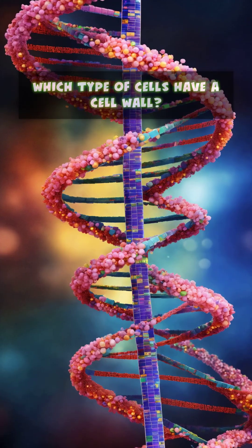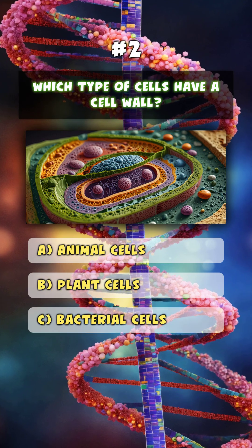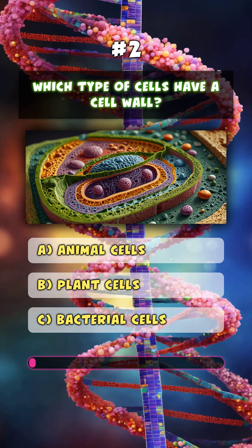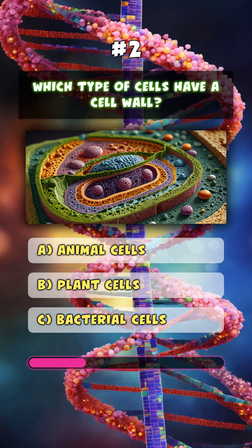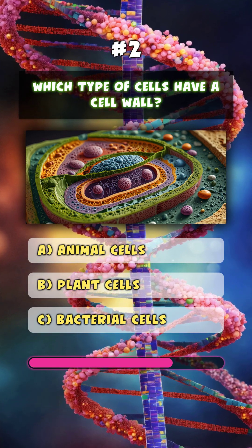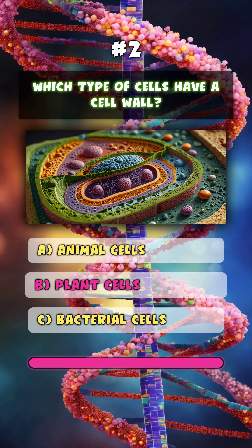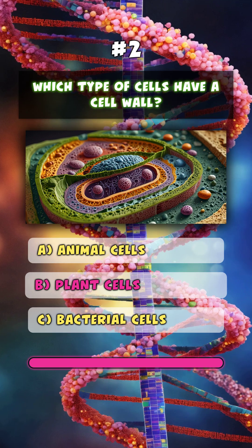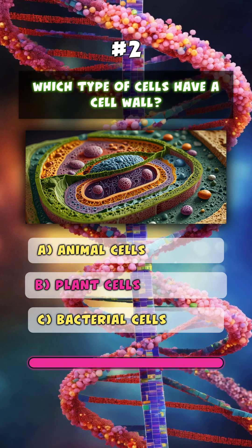Which type of cells have a cell wall? B. Plant cells.